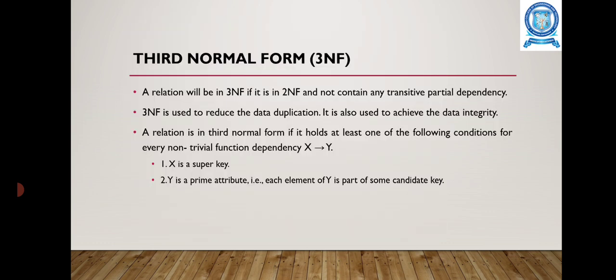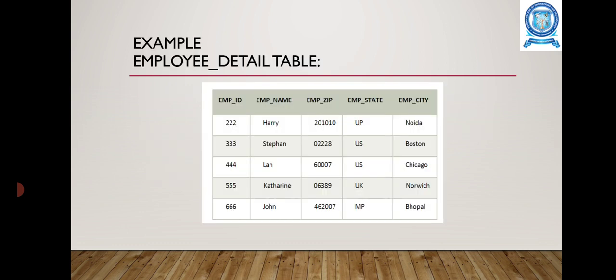Next is the 3rd Normal Form. A relation will be in the 3rd Normal Form if it is in the 2nd Normal Form and does not contain any transitive partial dependency. The 3rd Normal Form is used to reduce data duplication and to achieve data integrity. A relation is in 3rd Normal Form if for every non-trivial functional dependency X → Y, X is a super key or Y is a primary attribute (each element of Y is part of some candidate key). An example is an employee table with employee ID, employee name, employee zip code, employee state, and employee city.